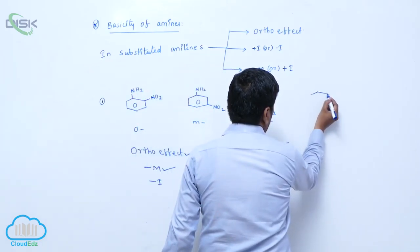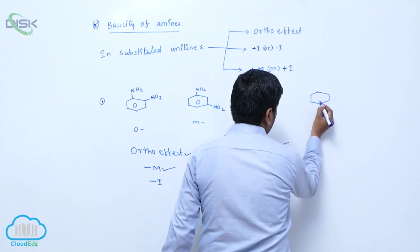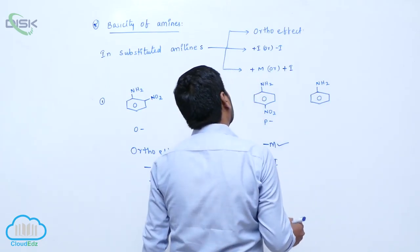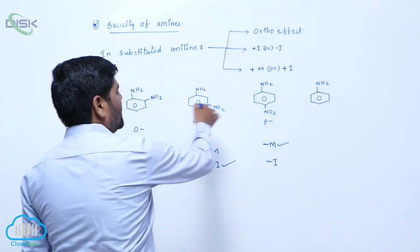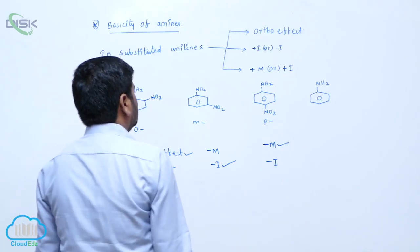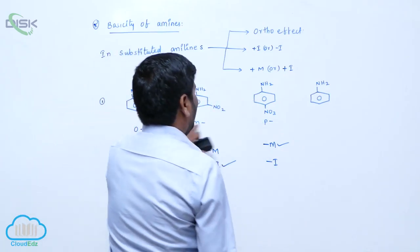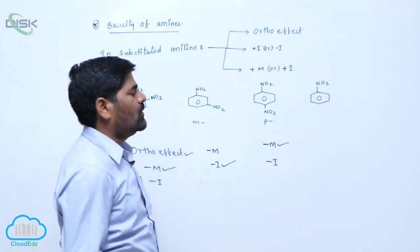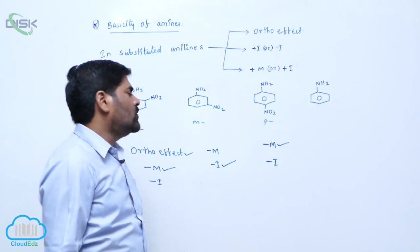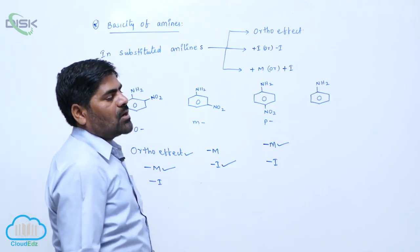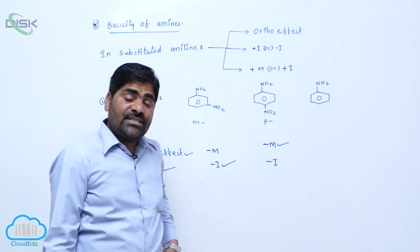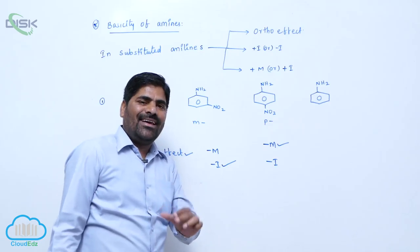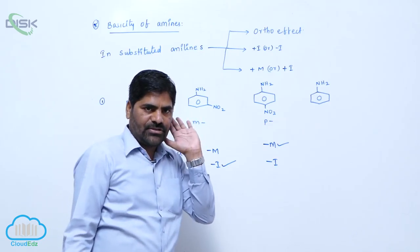The last one is Aniline. Now when we compare the basicity, these three nitroaniline compounds are less basic when compared to Aniline. In Ortho-Substituted Benzoic Acid, acidic nature increases, whereas in Ortho-Substituted Aniline, basic nature decreases. The reason is the Ortho-Effect.